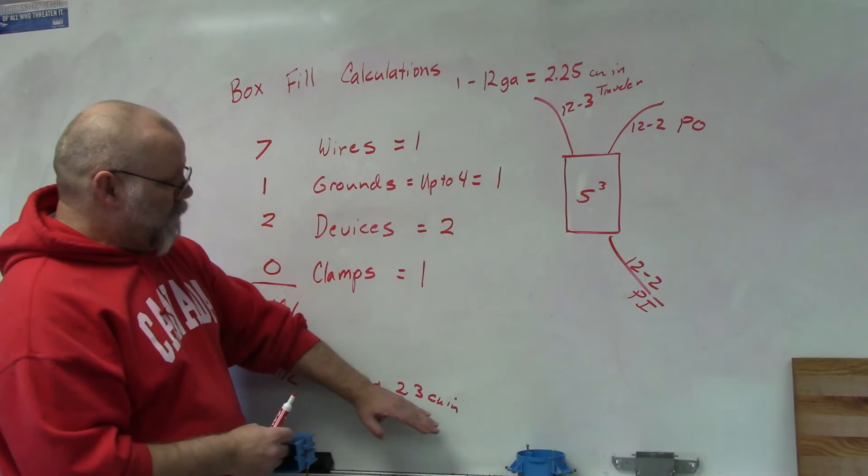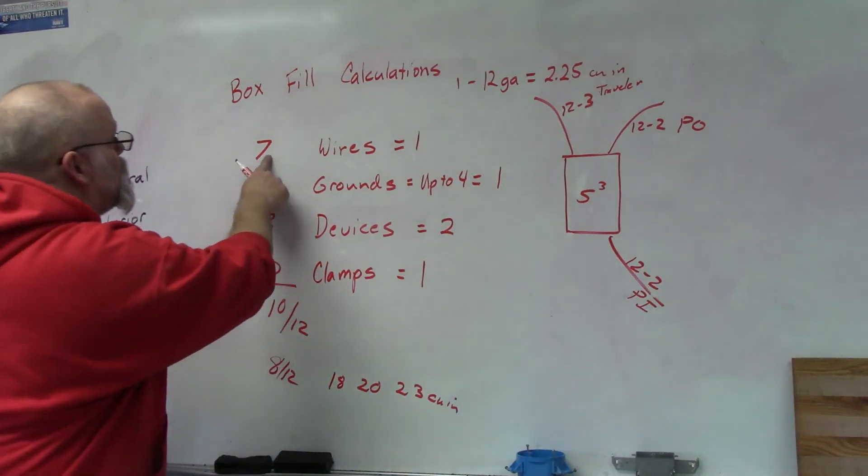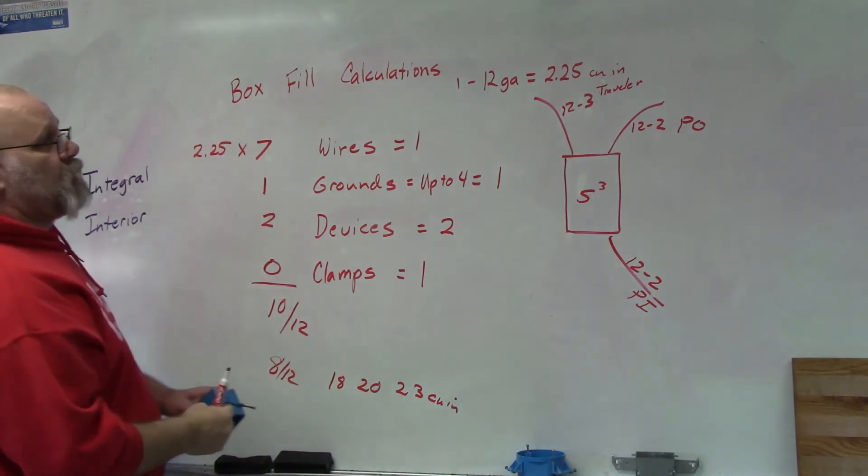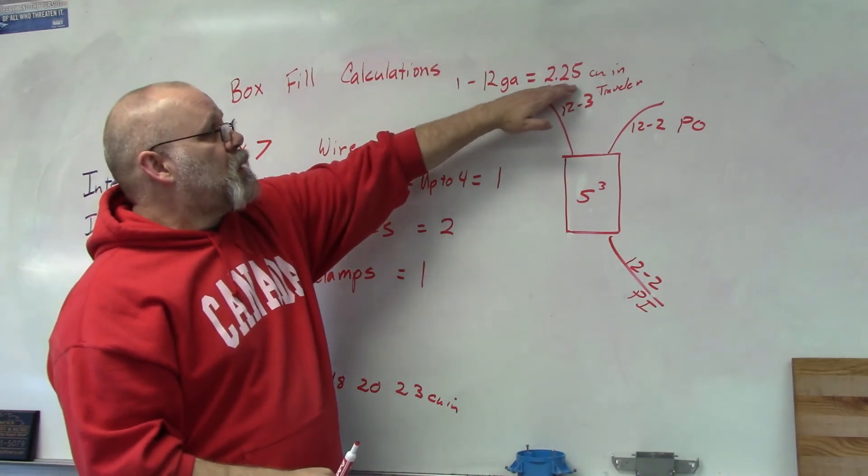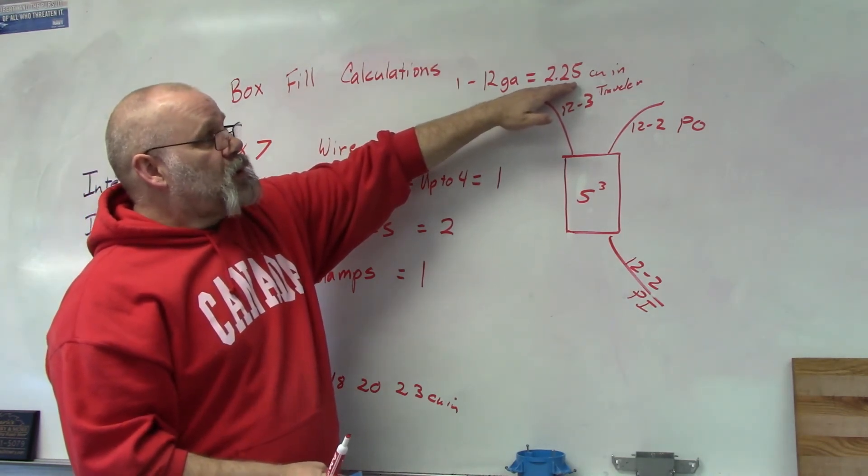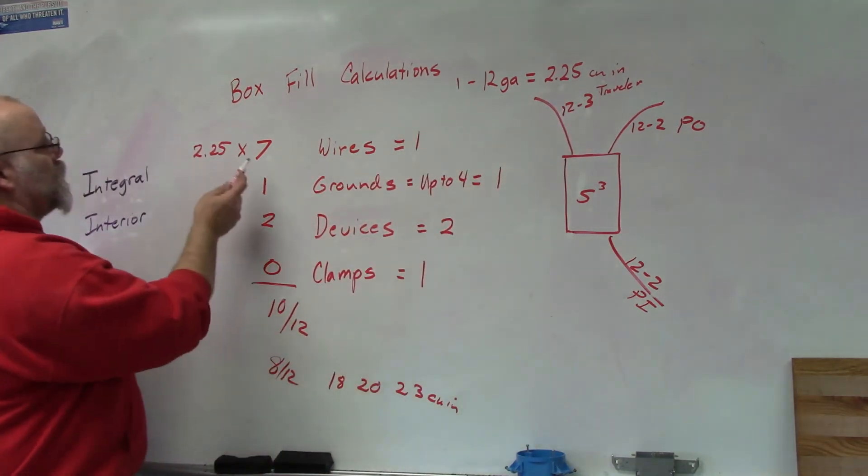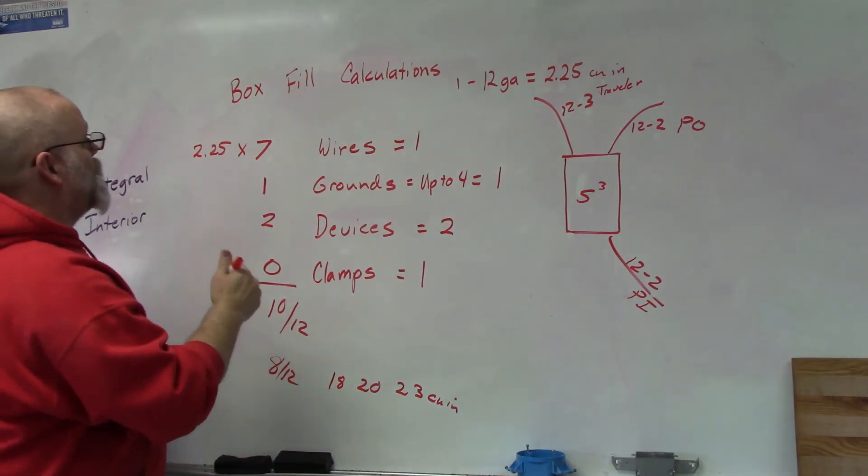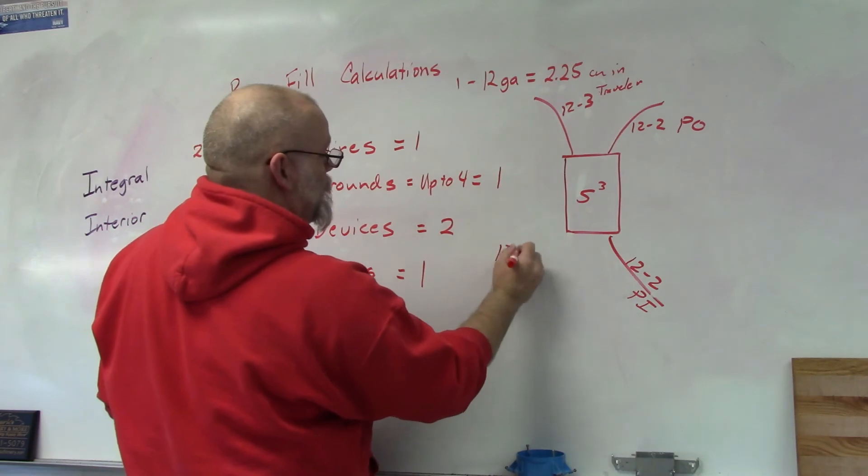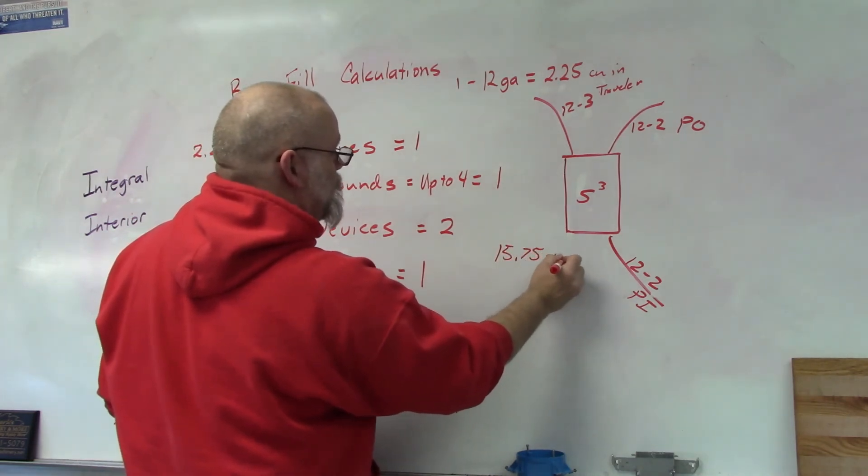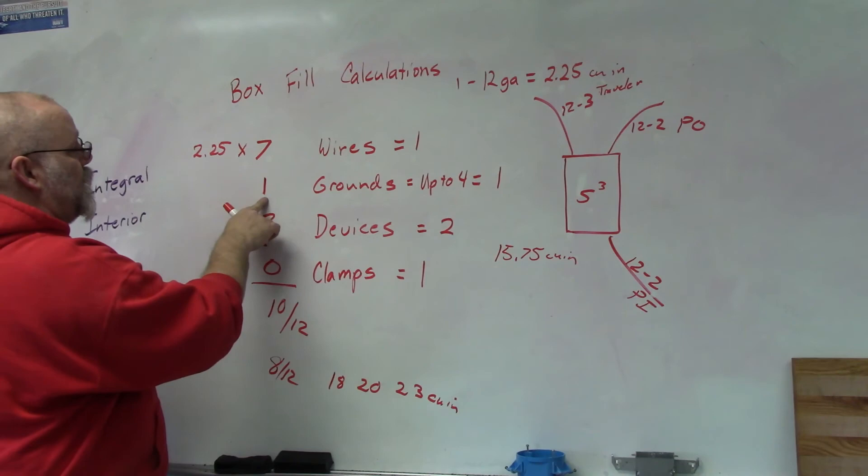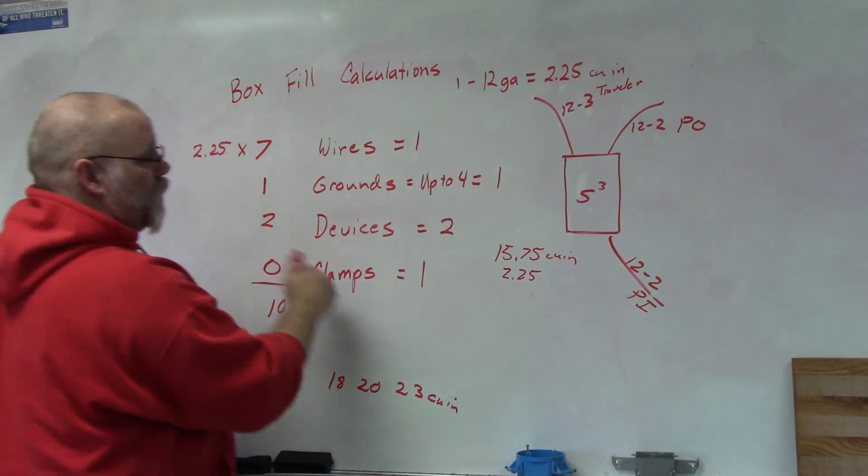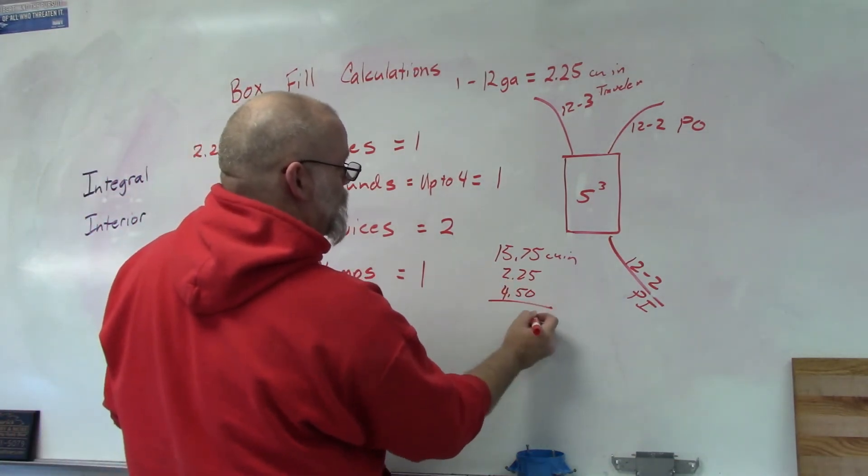So we can figure it out using the cubic inch method. All we'd have to do then is take this times 2.25 because 12 gauge wire is considered 2.25 cubic inches. So if I multiply these two numbers, seven times 2.25, I get 15.75 cubic inches. Then the grounds I would count as one, so I get 2.25, and then the device would be two, so that would be 4.5.